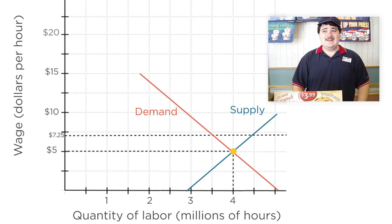To answer this, we use the demand curve. At a wage of $7.25, restaurants only demand 3.5 million hours. The higher wage means that these firms are less interested in hiring workers. In the short run, they might just produce less with fewer workers. In the long run, they might substitute machines. In any case, the minimum wage leads to these restaurants demanding fewer workers.